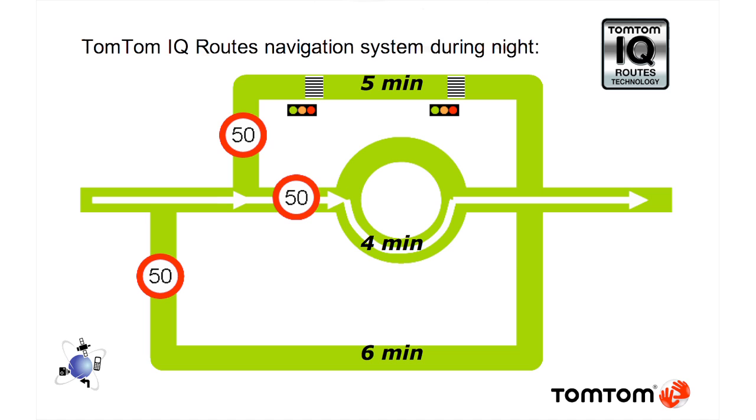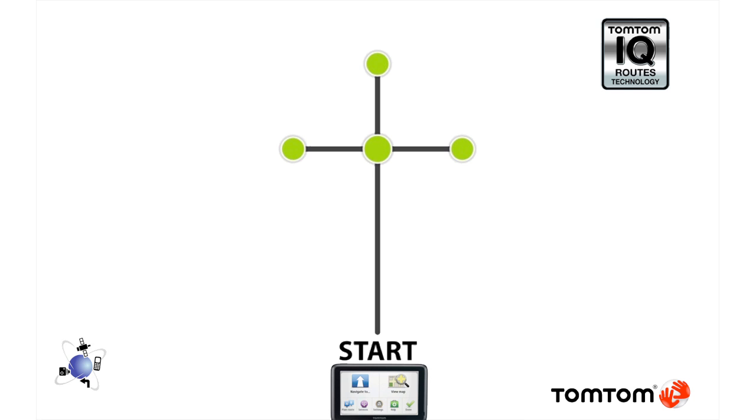This is because TomTom knows the average speed of the roads in five minute slots for each of the seven days of the week. Let's look at the implementation of this data in routing. Here we are at the first junction on our trip. This has three possible turns which we have to check. As we know the time we're travelling, we also know the average speed for each road segment.